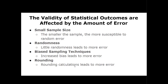There are things you can do from the very beginning to minimize error. First, if you have a small sample size, you're going to have a lot of error — the smaller the sample, the more susceptible it is to random error. You also want to make things as random as possible; purposefully chosen samples lead to more error. Make sure you're choosing the right sampling techniques, because biased sampling with less randomness leads to more error. Finally, rounding repeatedly throughout the statistical process accumulates error and affects the final outcome.